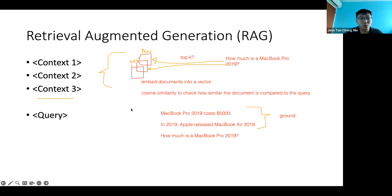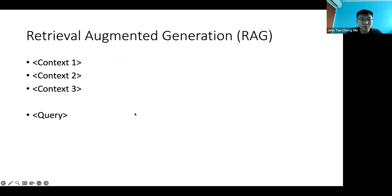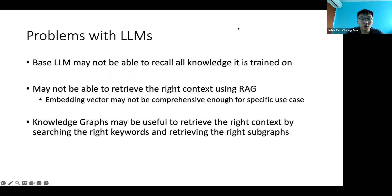In fact, you could even replace retrieval augmented generation with knowledge graph augmented generation — it's perfectly replaceable. This is one idea of how large language models can be made more accurate. If you cannot recall the knowledge, you can retrieve the right context using retrieval augmented generation, provided you can retrieve the context correctly.